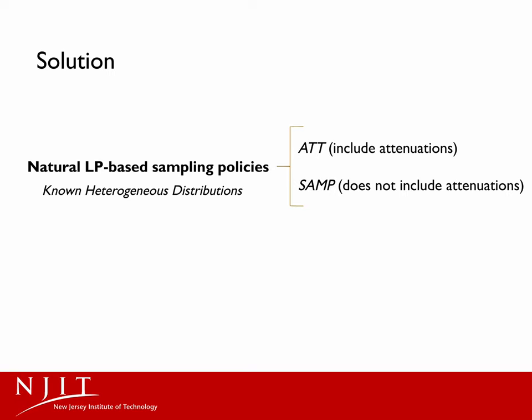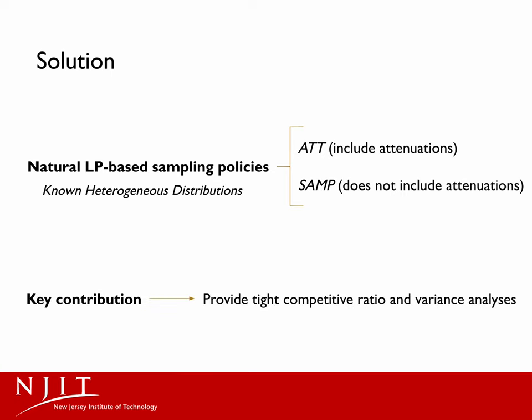In this work, we propose an online matching-based model and focus on two natural LP-based sampling policies that serve as foundational elements in its design. The two policies feature one with attenuations and one without. Our model considers non-heterogeneous distributions, which assume the arriving distributions of dynamic agents are accessible in advance and can change over time. Our main technical contribution lies in providing rigorous and comprehensive competitive and variance analysis for these two representative policies, which can be generalized to other settings. Thank you.